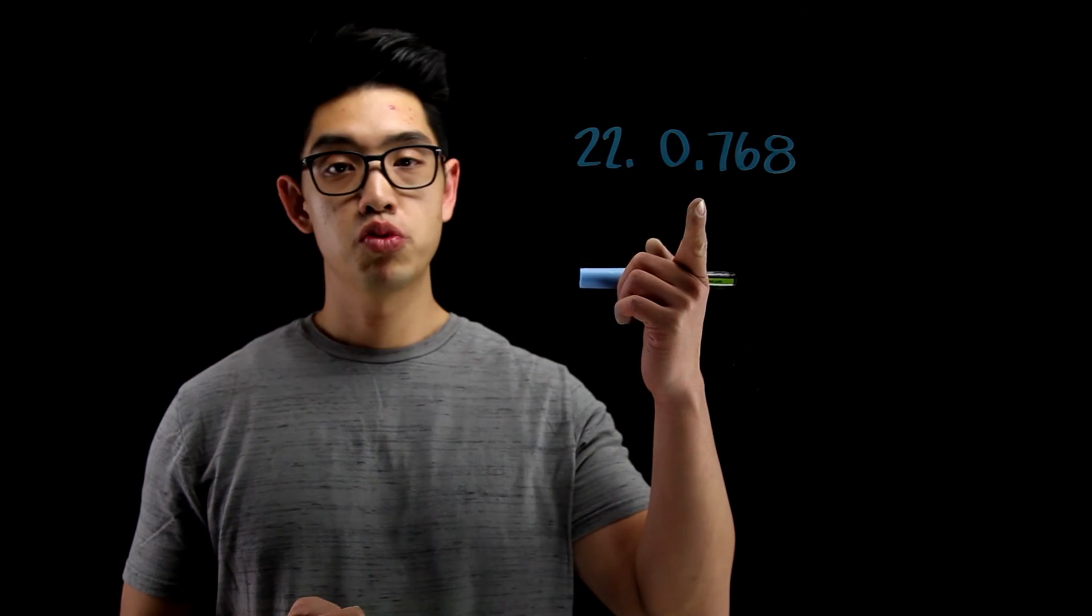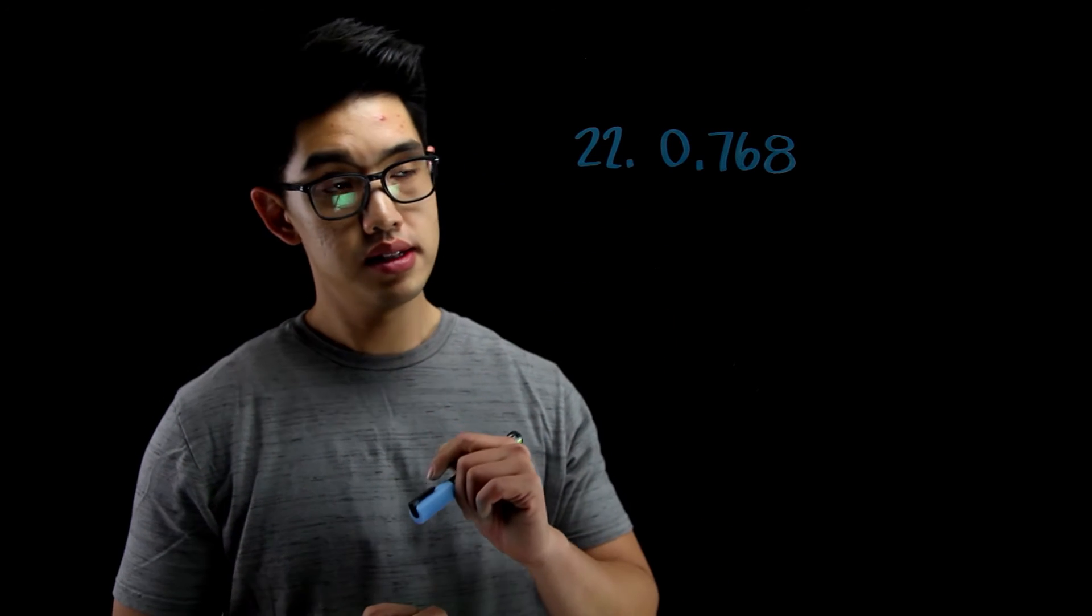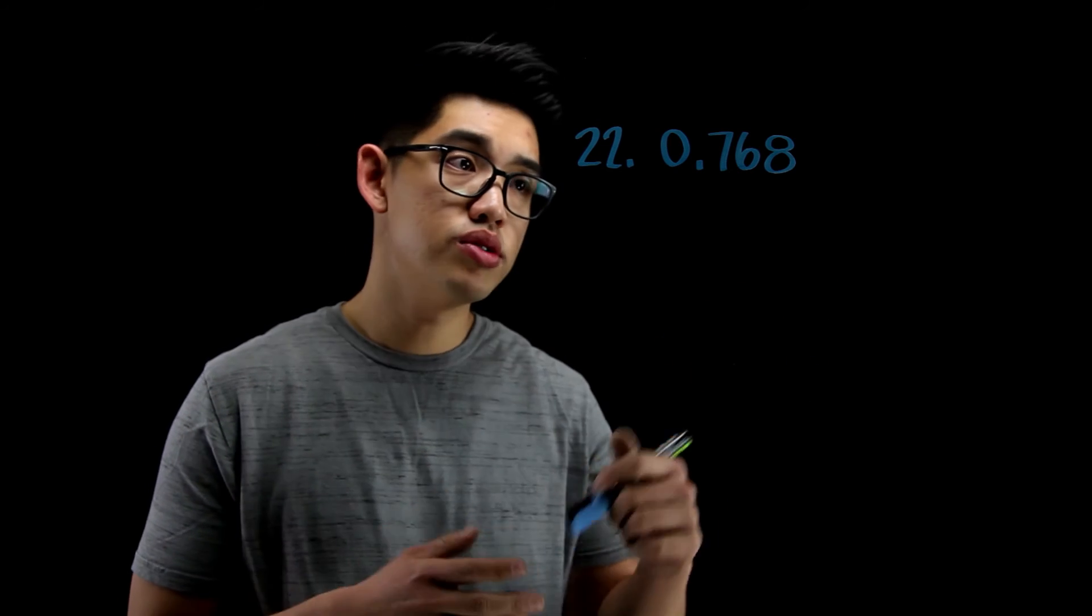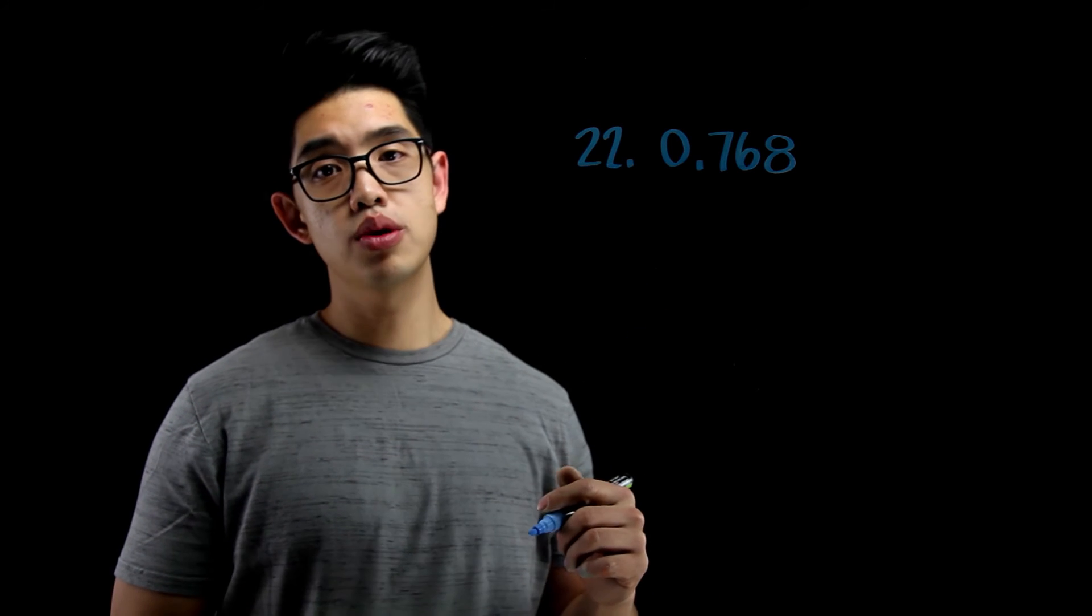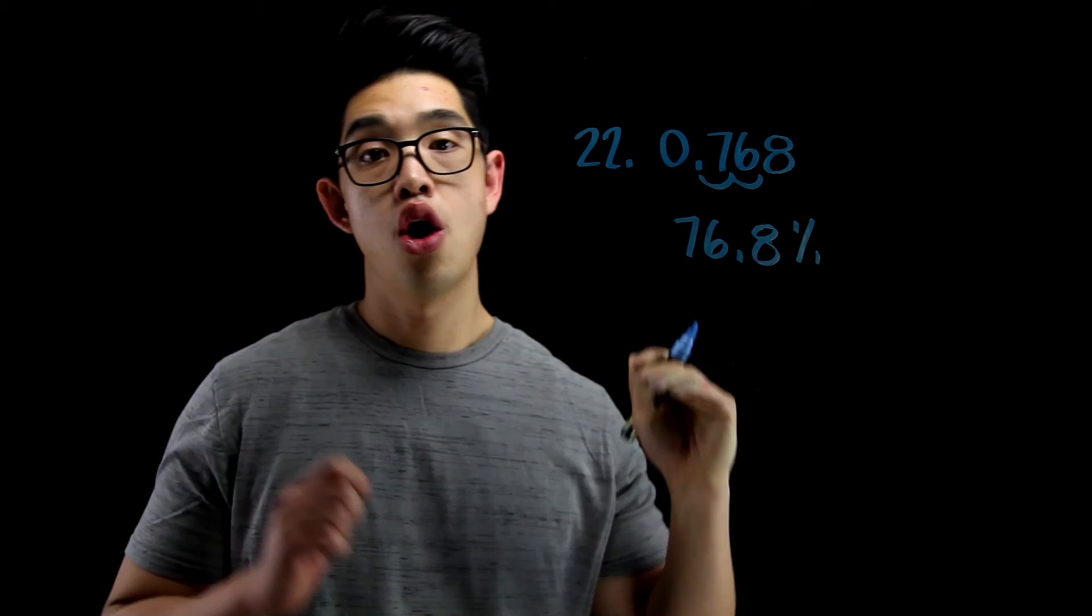Number 22, we want to make 0.768 into a percent. Oh my gosh. Easy again. All we're going to do, we can use the shortcut, multiply this by 100 and move the decimal point to the right two times. I'm going to go boink, boink. That's going to be 76.8 percent. We're done.